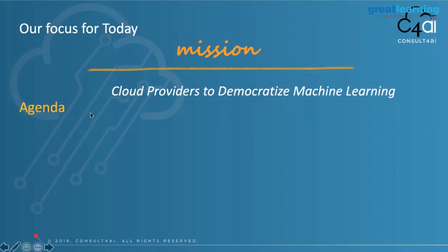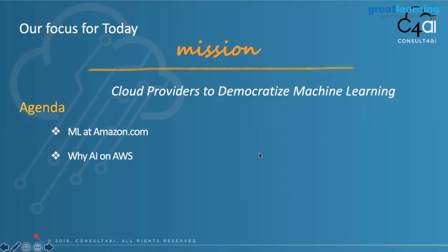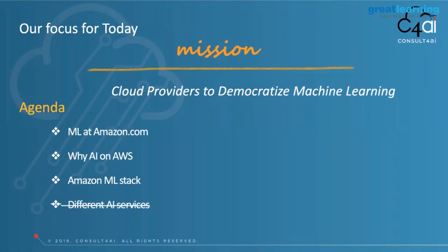The agenda for today: ML at Amazon.com is where we'll start. Then why AI on AWS - we'll touch upon the basic reasons. Next, the AWS ML stack - the different stacks available in Amazon for machine learning services. Different AI services won't be a focus today. We'll end with Amazon SageMaker - first the theoretical understanding of how SageMaker works, then a quick hands-on of how to do data science processing using this AWS service.